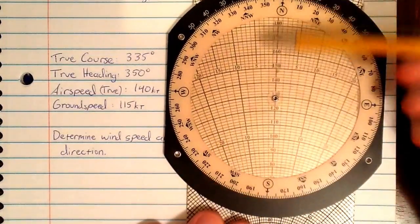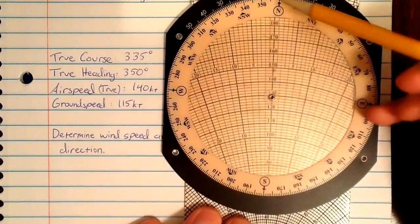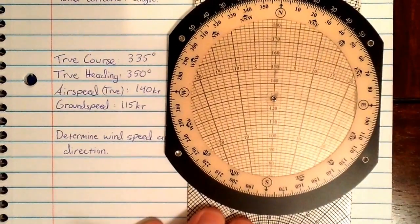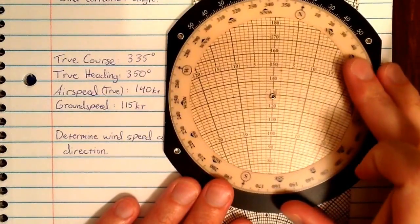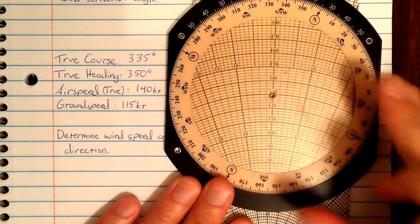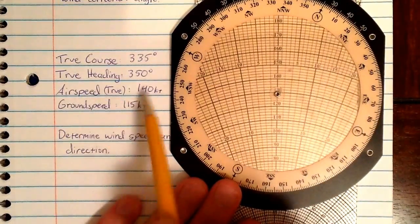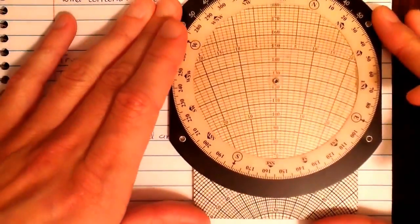Remember, the top down to the grommet is what's actually happening in relation to the ground. The course you're flying over the ground. The speed you're flying over the ground. What do we know? We know that we have a course of 335 degrees, so we can set that at the top. We know the speed that we're flying over the ground. Our ground speed is 115 knots. So I'll set that underneath the grommet.